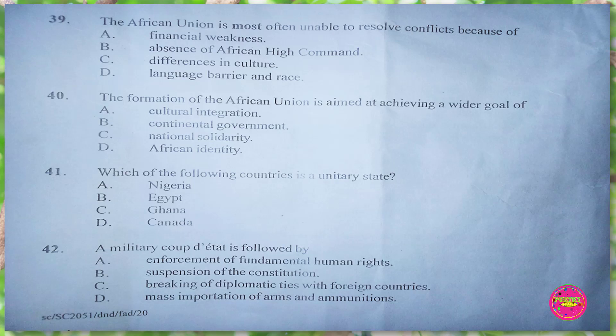Question 42. A military coup d'état is followed by: A. enforcement of fundamental human rights, B. suspension of the constitution, C. breaking of diplomatic ties with foreign countries, D. mass importation of arms and ammunition. The correct answer is B. suspension of the constitution.